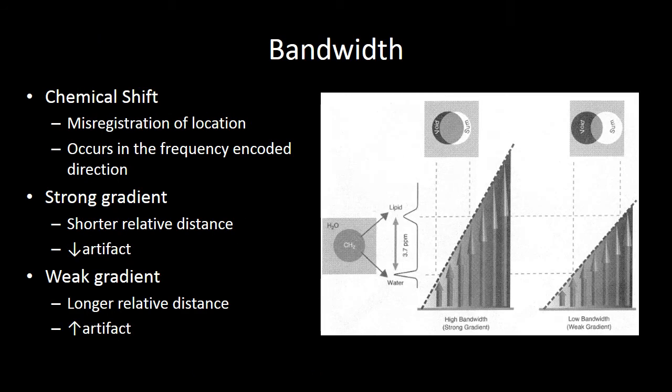When we think about how that impacts chemical shift, chemical shift is a misregistration of location. And it occurs in your frequency encoded direction. So at a high bandwidth or a very strong gradient...